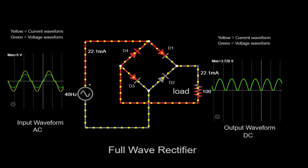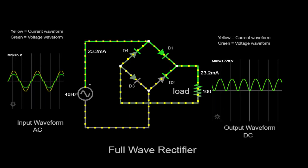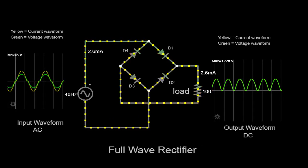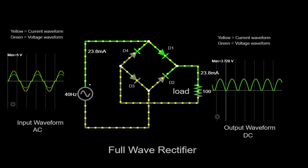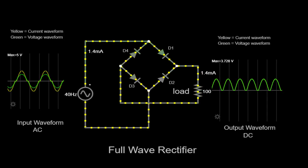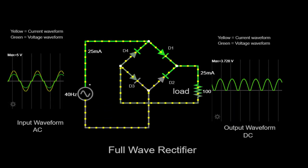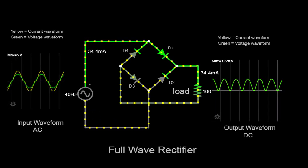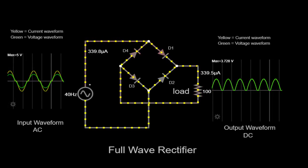Let's begin by examining the components of our setup. We have a 5 volt, 40 hertz AC power supply connected as our input. This represents the typical alternating current that we aim to rectify. To simulate a practical scenario, we've added a 100 ohm resistor as a load, which represents an electronic device drawing power from the rectifier.